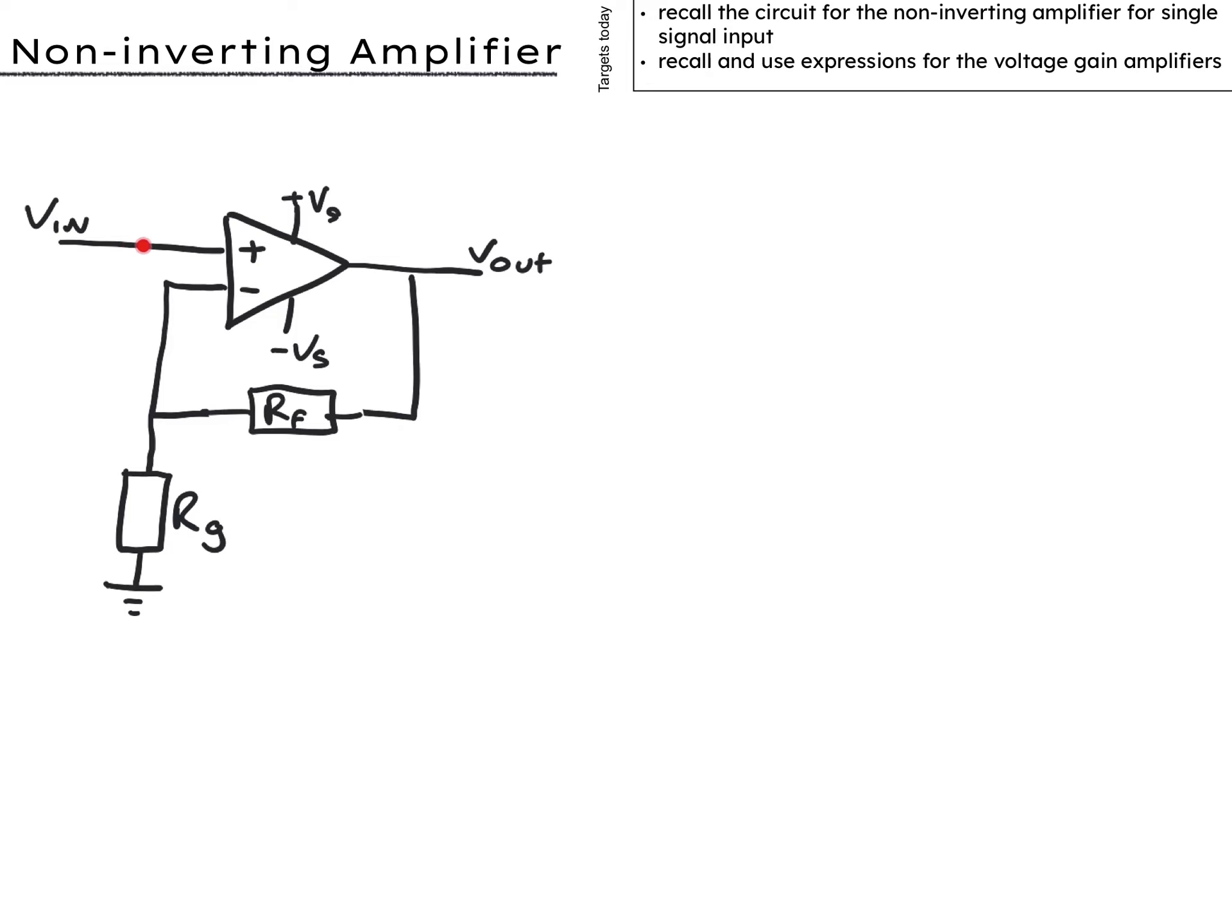Let's look at developing an expression for the gain again. I'm going to remove the op-amp because it draws no current so Kirchhoff is okay with this. Straighten out the circuits.